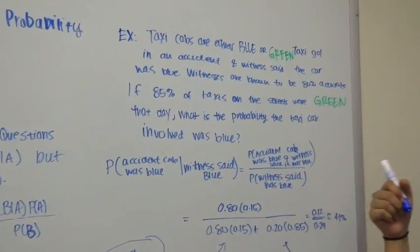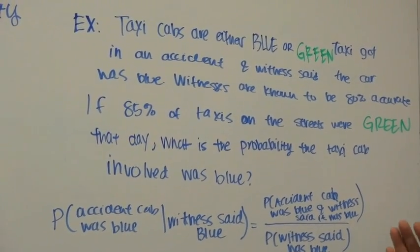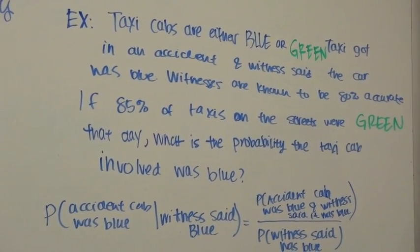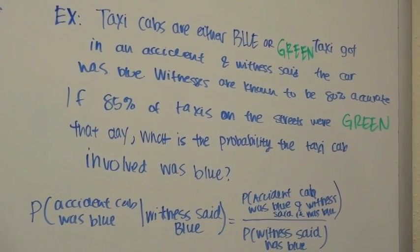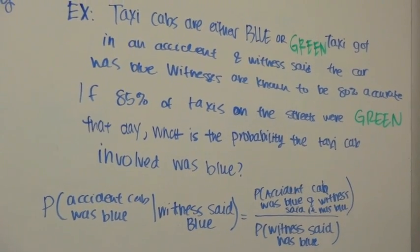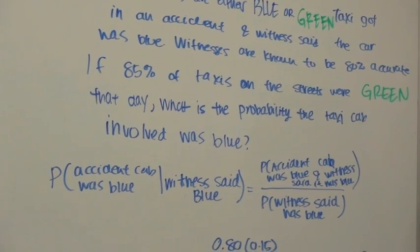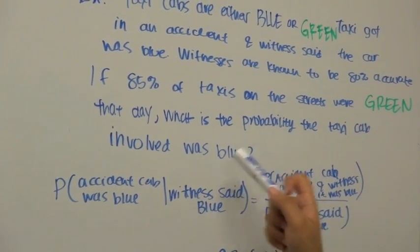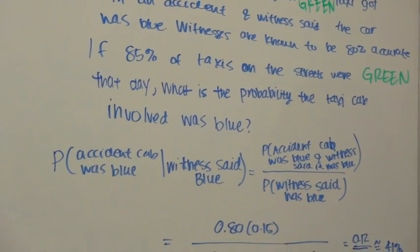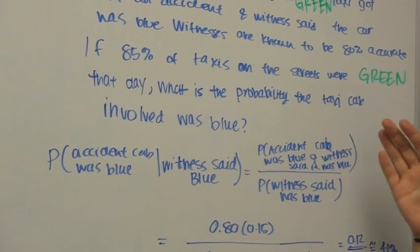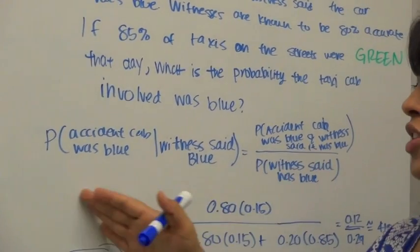The question: taxi cabs are either blue or green in a given city. A taxi got in an accident and the witness said the car was blue. Witnesses are known to be 80% accurate. If 85% of the taxis on the streets were green that day, what is the probability that the taxi involved in the accident was blue? We're asked to find the probability the taxi cab was blue given the witness accuracy information.